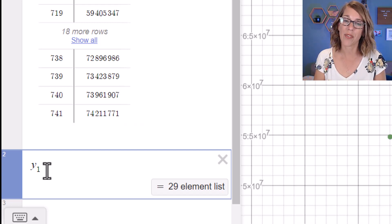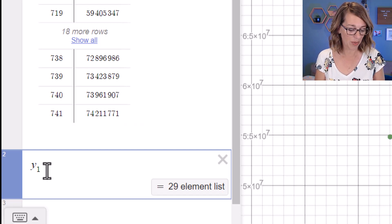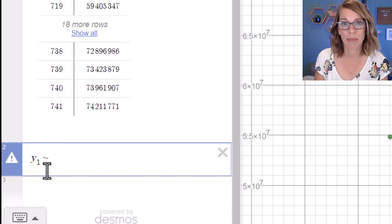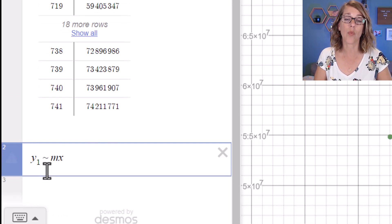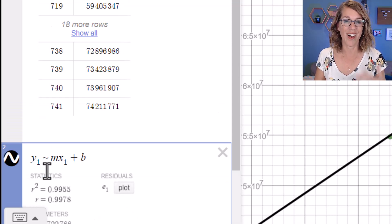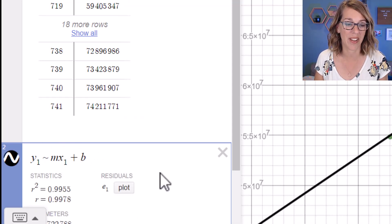Next, I want the tilde for the approximated, and that's right next to the number 1 on my keypad. So I'm going to go shift and grab that tilde, and then mx plus b, but I want mx1 to get the data from my table plus b. Again, it automatically subscripts that 1.